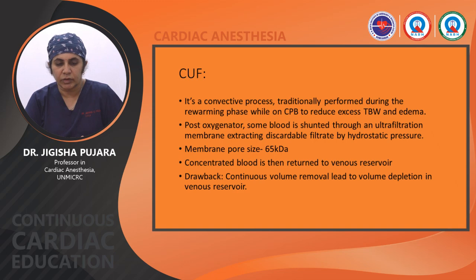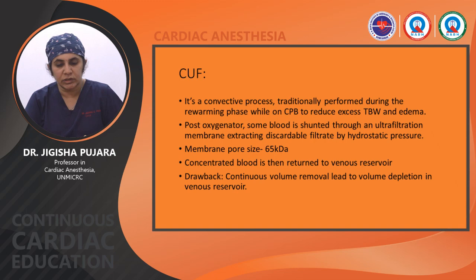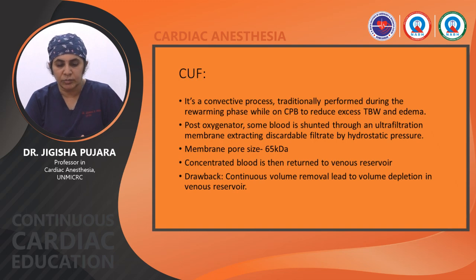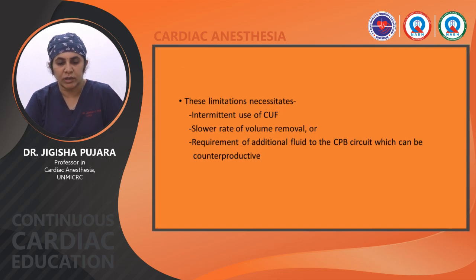Conventional Ultrafiltration (CUF) is a convective process traditionally performed during the rewarming phase of CPB to reduce excess total body water and edema. Post-oxygenator, blood is shunted through the ultrafiltration membrane, extracting discardable filtrate by hydrostatic pressure. Membrane pore size is 65 kDalton and concentrated blood is returned to the venous reservoir. The drawback of CUF is that the volume removed leads to volume depletion in the venous reservoir, sometimes causing hypovolemia.